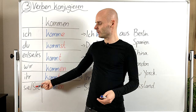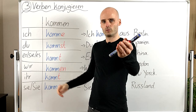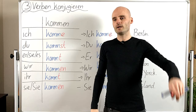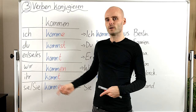Here we are going to take a look at the persons — the personal pronouns. It's ich, du, er, sie, es — which is he, she, it — then wir, ihr, und sie. And then we have a 'Sie' with a capital S, and we are going to take a look at this one later.